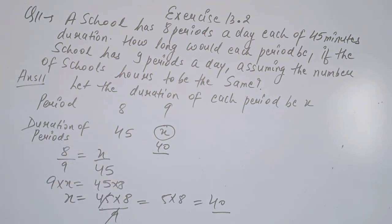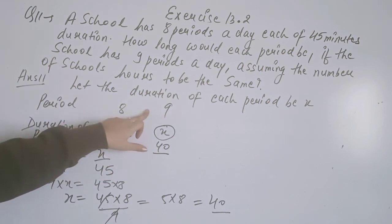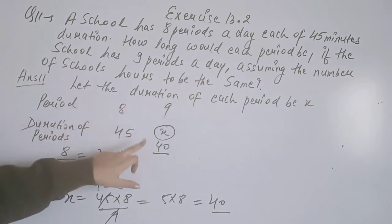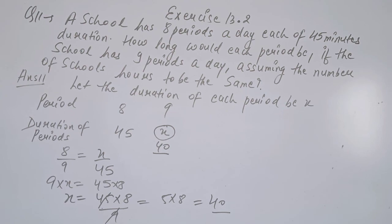So if the number of periods is more, the time per period is less. The number of periods is inversely proportional to the duration of each period. That means the answer is 40 minutes per period. This completes our exercise. In the next video we will discuss the next chapter.